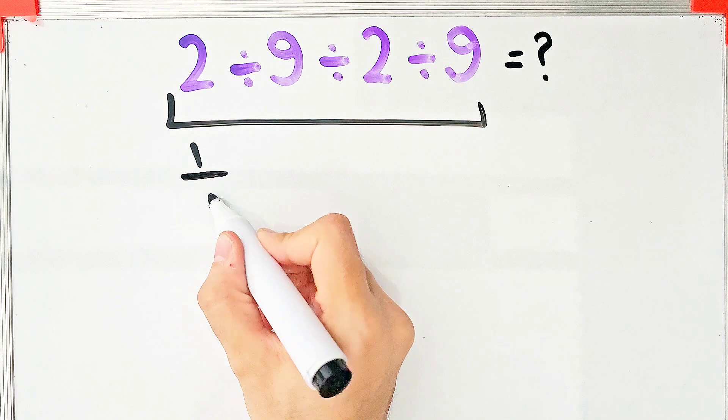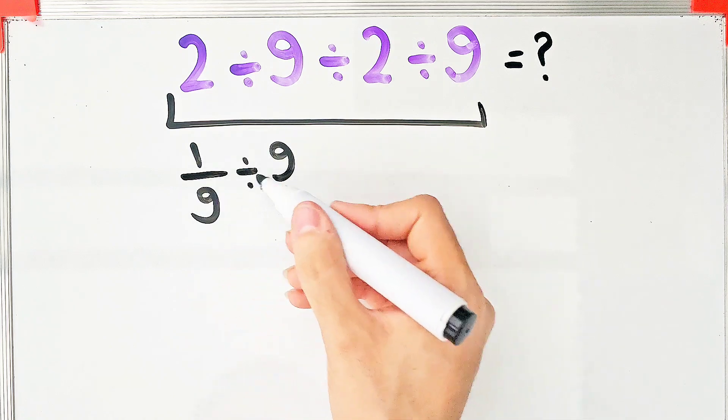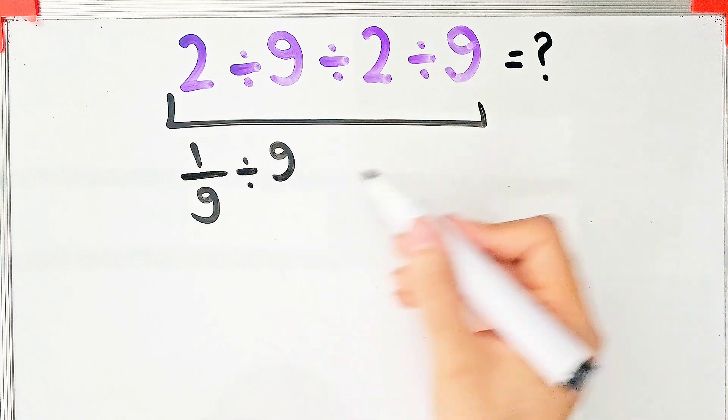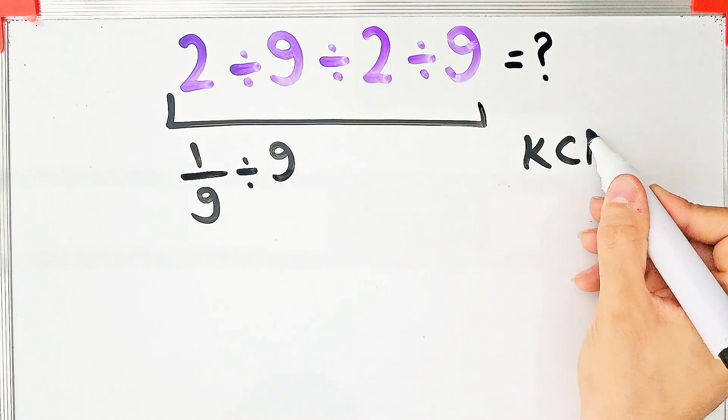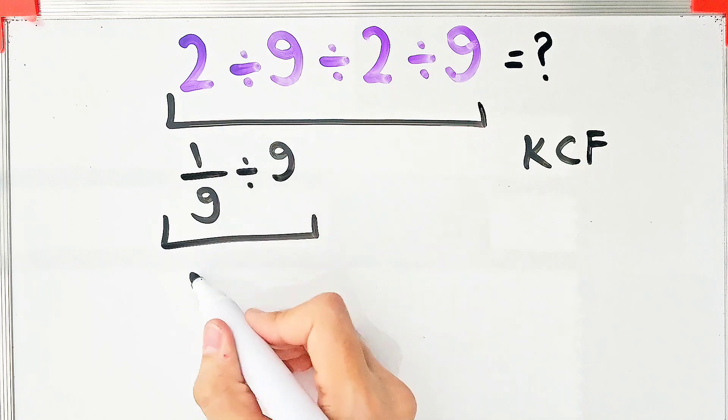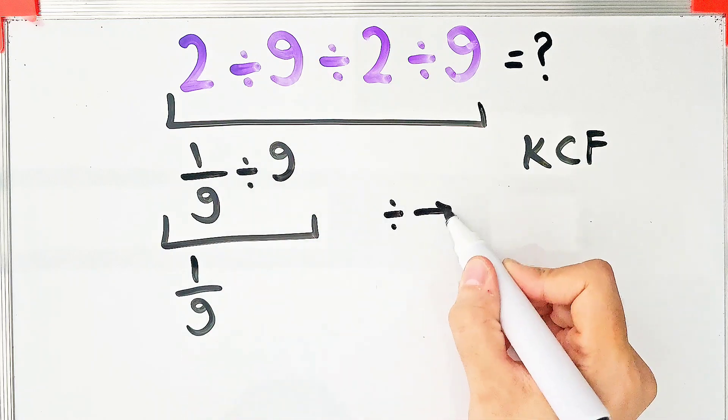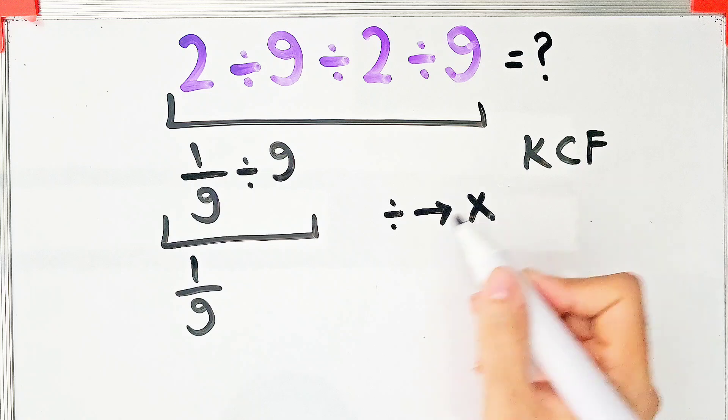Again, we use the KCF rule. We have 1 over 9 divided by 9. According to the KCF rule, first we keep the first fraction as it is. After that, we change the division sign to the multiplication sign. And after that, we flip the second number. As you can see in the image, we keep the first fraction, then change the sign, then flip the second number.